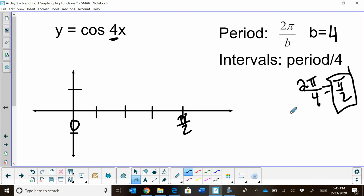So I'm going to label zero as my starting point. And the end of a cycle is pi halves. Now I can take pi halves to find my intervals and divide them into four. So I'm going to divide this by four, which is multiplying by one fourth. So that gives me pi eighths.